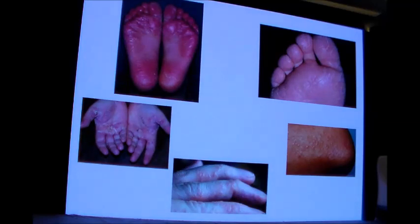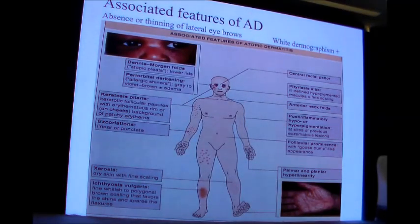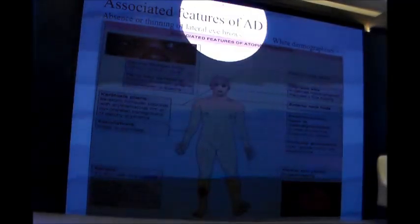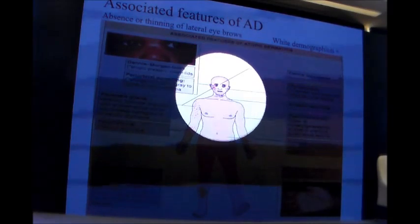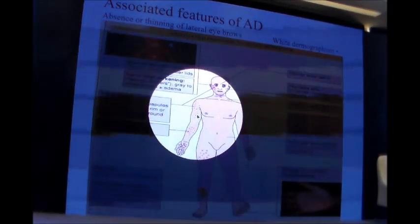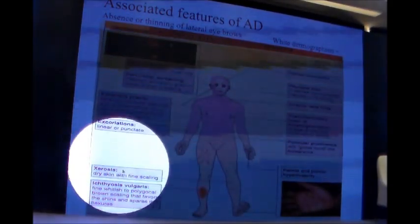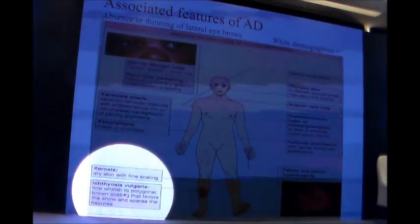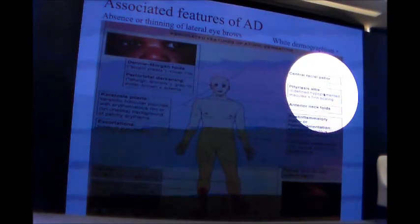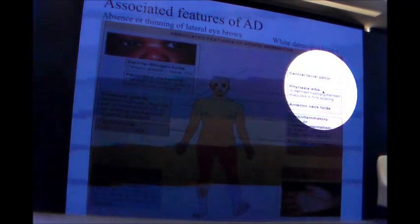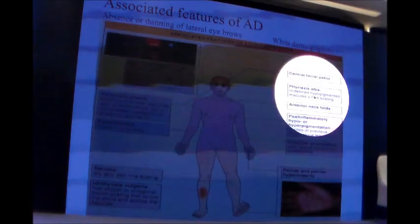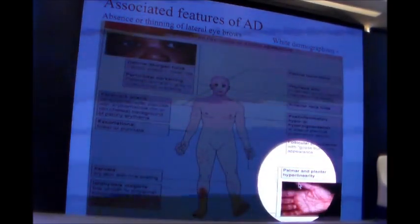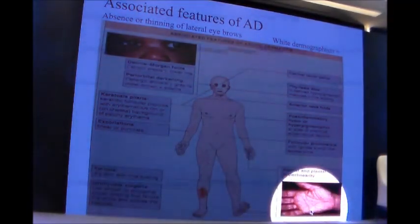Associated features of atopic dermatitis include Dennie-Morgan folds in the lower eyelids, periorbital darkening, keratosis pilaris — prominent follicular openings — xerotic skin, the presence of ichthyosis vulgaris due to filaggrin mutation, central facial pallor, areas of pityriasis alba presenting as white dry scaly areas especially on the cheeks, and palmar and plantar hyperlinearity. These features aid in the diagnosis.